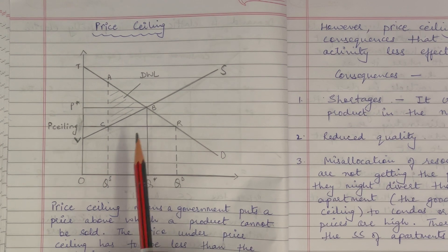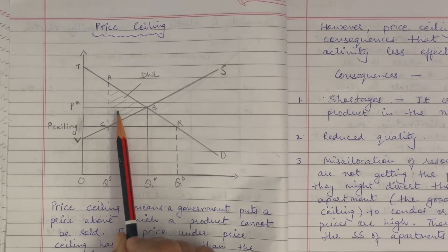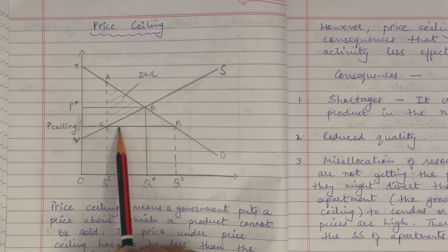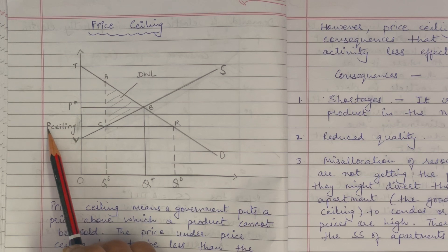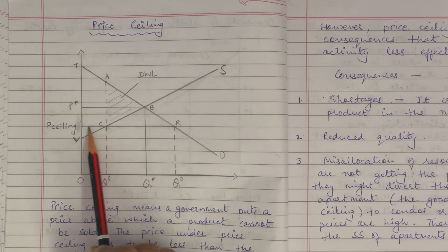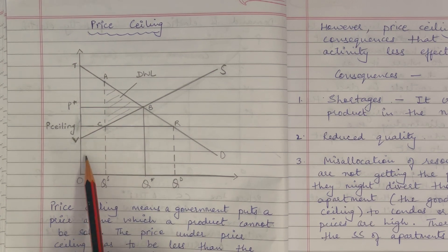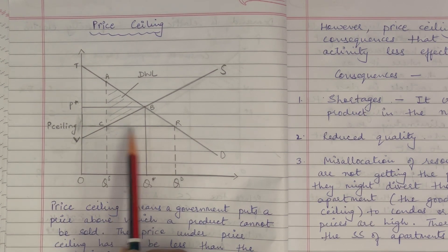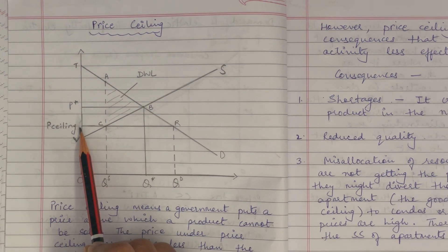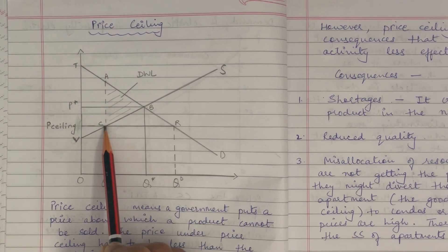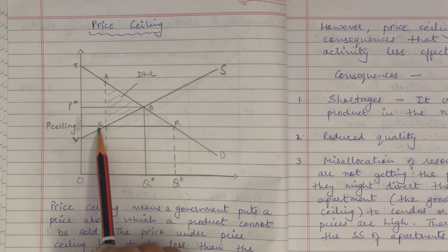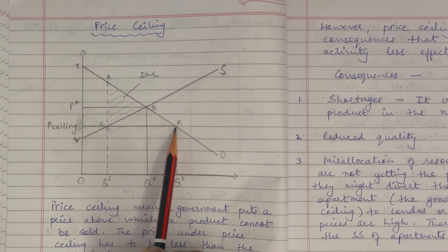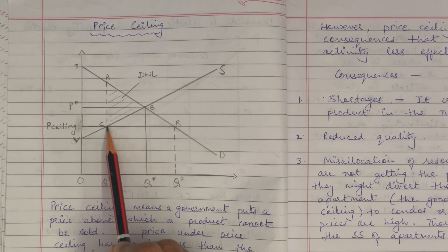Now what happens when there's a price cap or price ceiling by the government on any product? Since the price ceiling has to be below the equilibrium price, in this diagram I have made my price ceiling P-ceiling as CR. It could be anywhere below the equilibrium price. My P-ceiling is CR, and it intersects my demand curve at R and my supply curve at C.